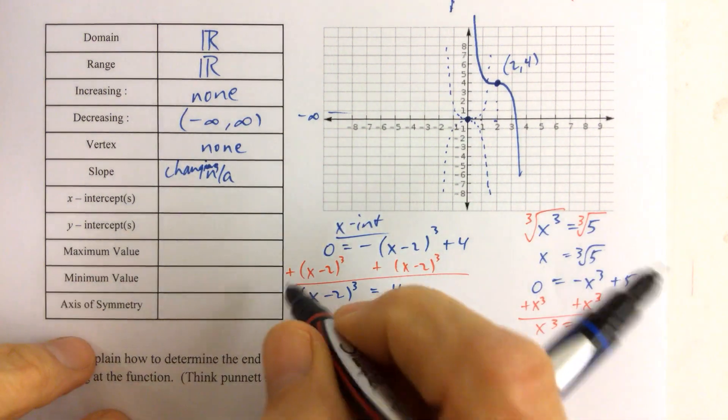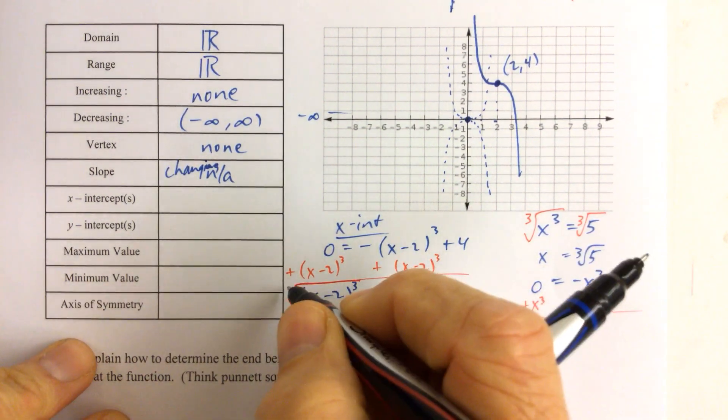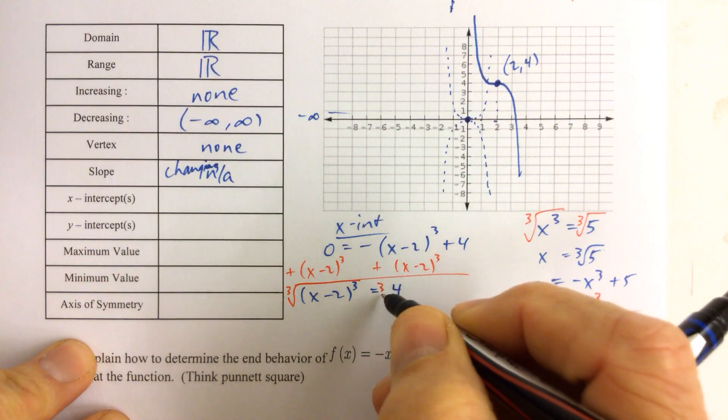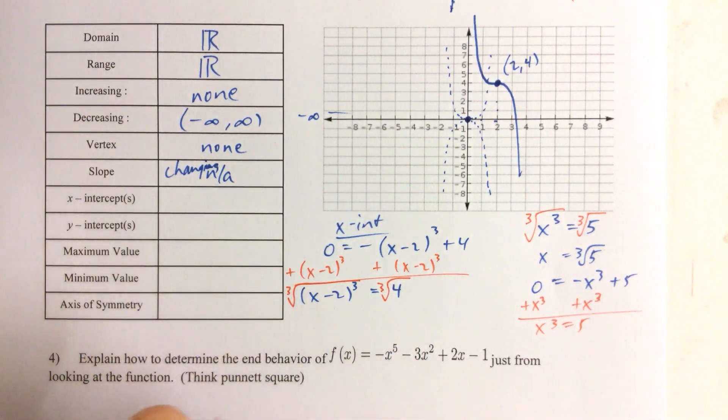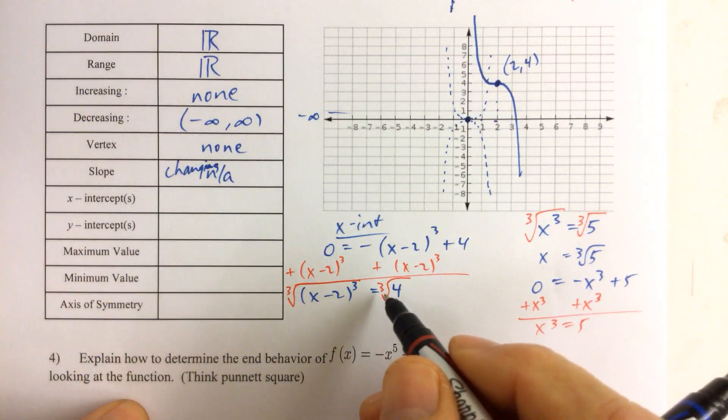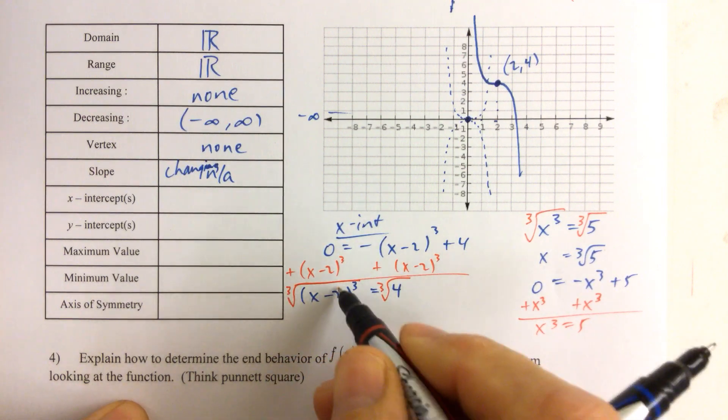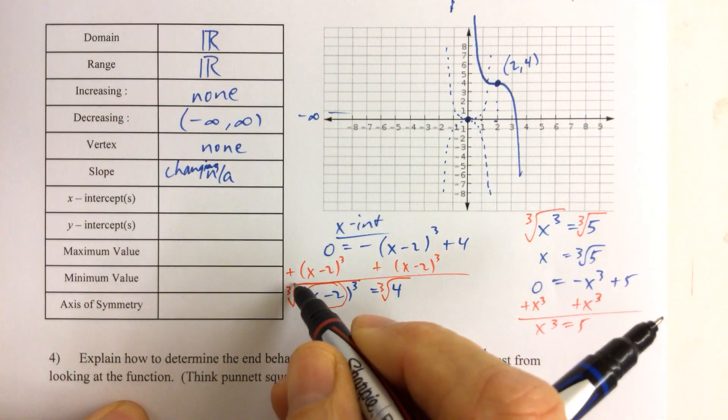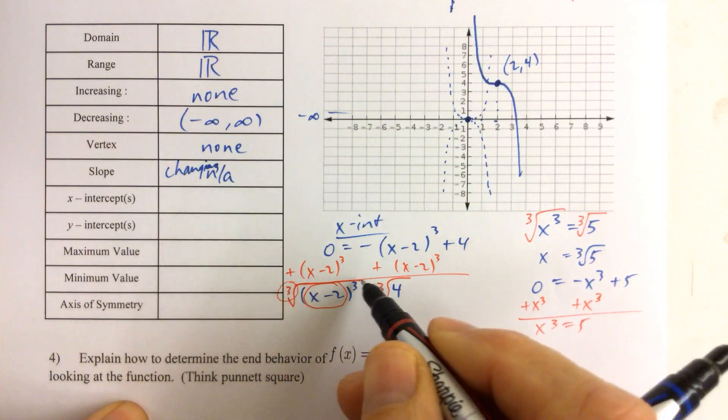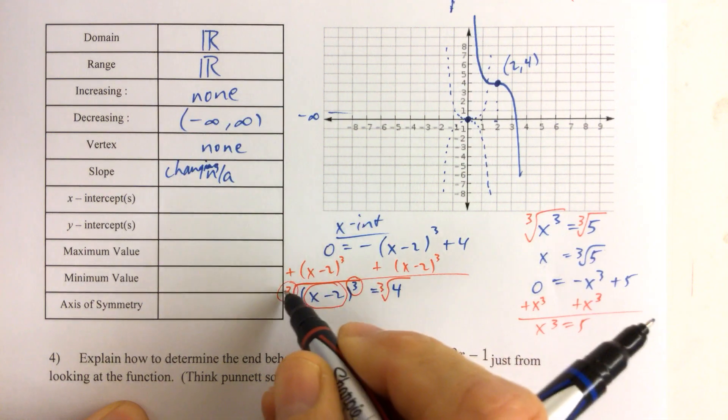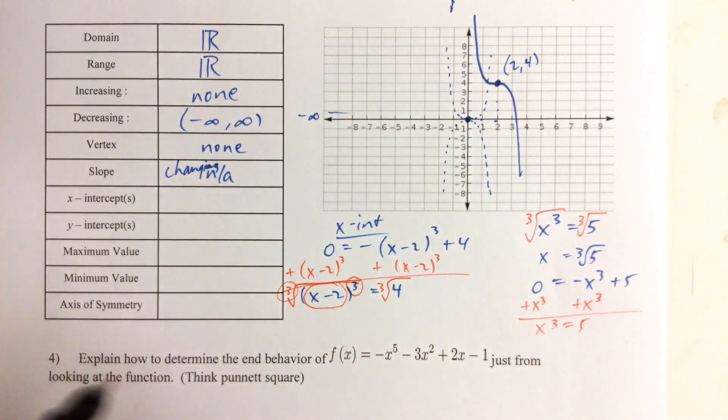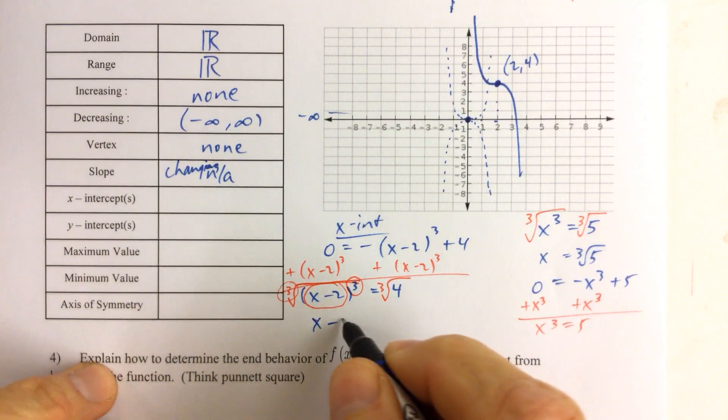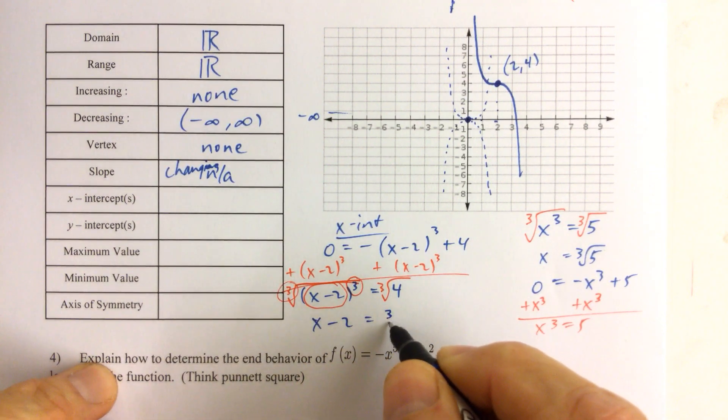If we get x minus 2 on the left side cubed equals 4 on the right side, then we want to take the cube root of both sides. Taking the cube root of both sides, the right side can't be simplified, but the cube root of something cubed, this is the something, cube root cancels that. So those guys cancel each other out.